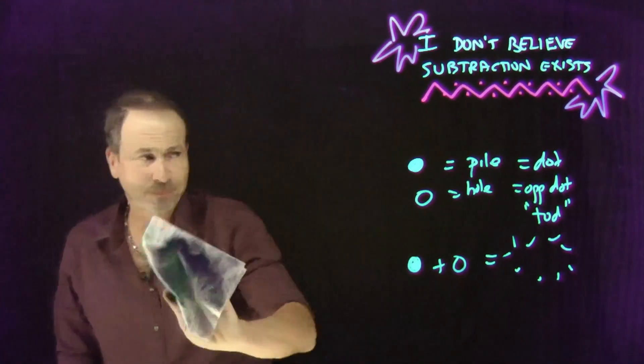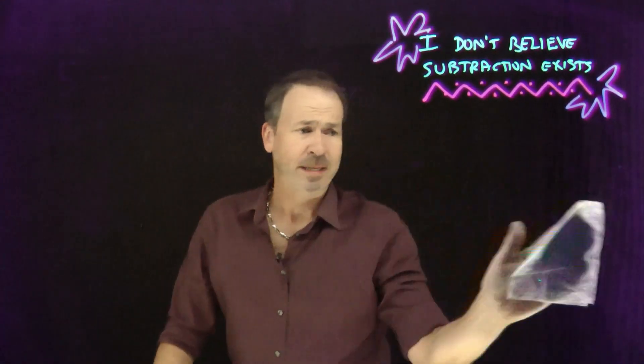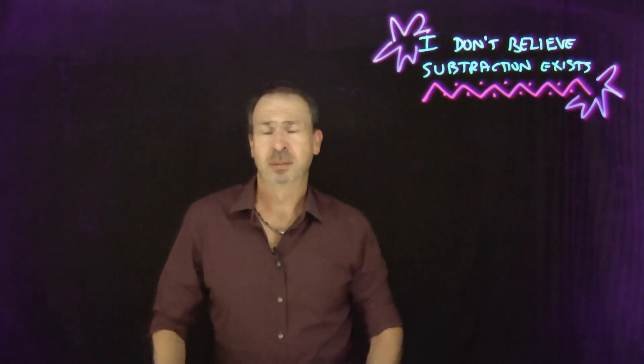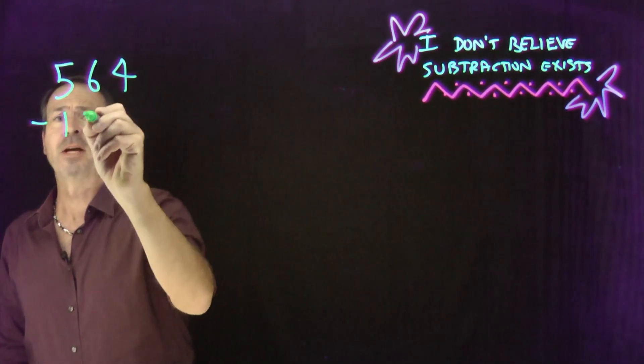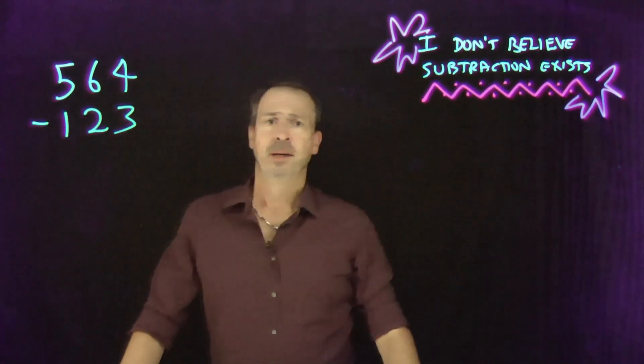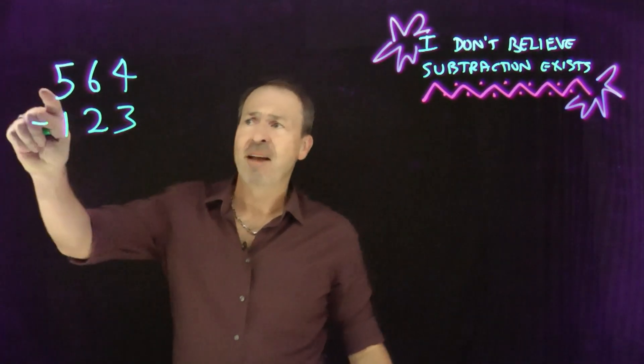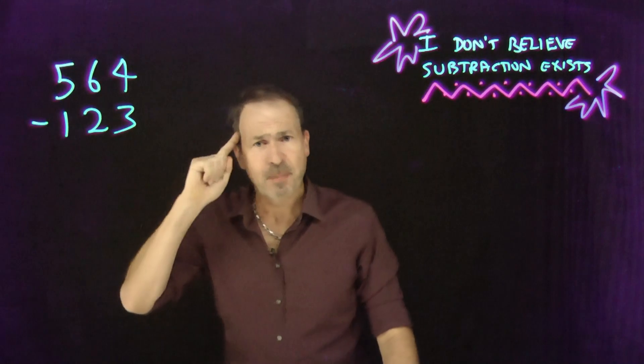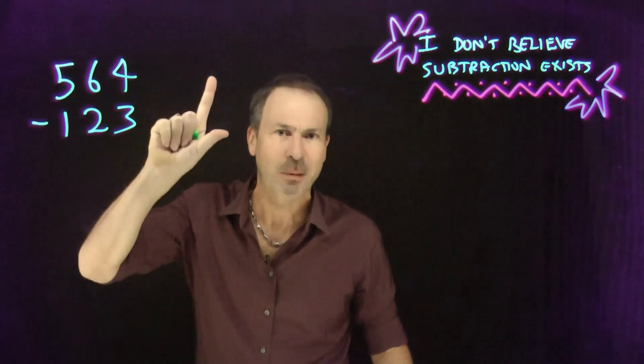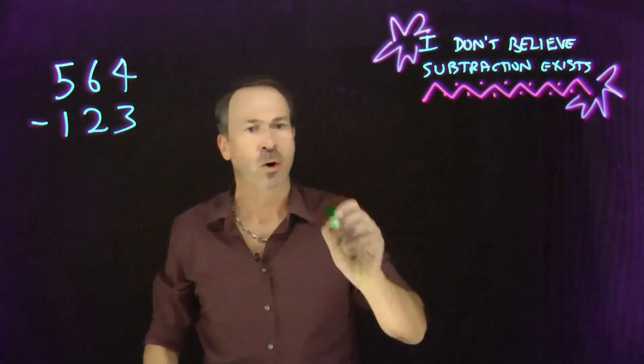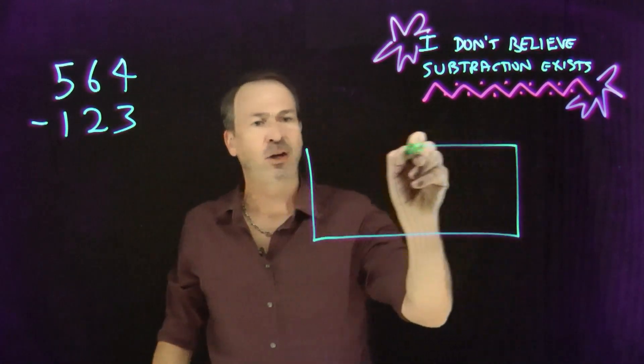Alright, so let's now get actually to school arithmetic. So in school arithmetic, you do things like long subtraction. Something like, I don't know, five hundred and sixty-four take away one hundred and twenty-three. So what's really going on there? Five hundred and sixty-four. So I'm actually speaking base ten there. Five hundreds. Six tens and four. So let me draw a base ten picture of this. So here's the ones, the tens and the hundreds.